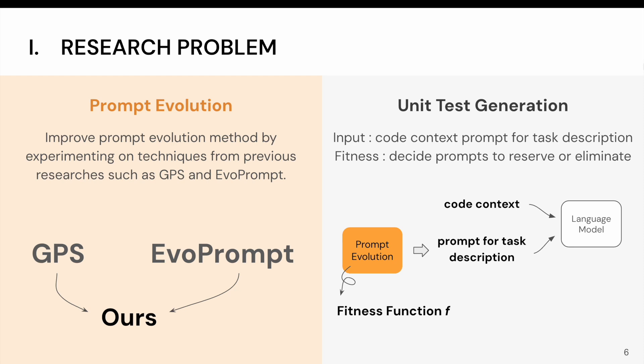such as GPS and EvoPrompt. For the downstream task of unit test generation, we send LLM-based unit test generators often receive input in two parts, code context and prompt for a task description.